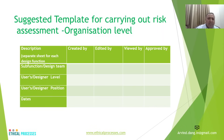At the end of this page, particularly from an IT perspective, one has to clearly capture for each function who has created the risk statement, who has edited it, who has viewed it, and who has approved it. This must state the person's name, their position — such as assistant manager, deputy manager, manager, general manager, or HOD — and the dates on which these actions were created, edited, viewed, and approved.